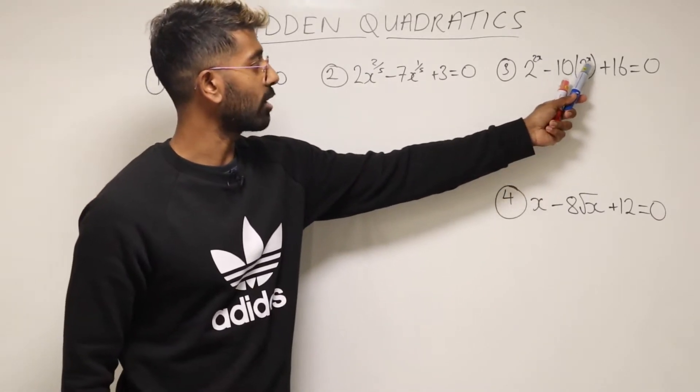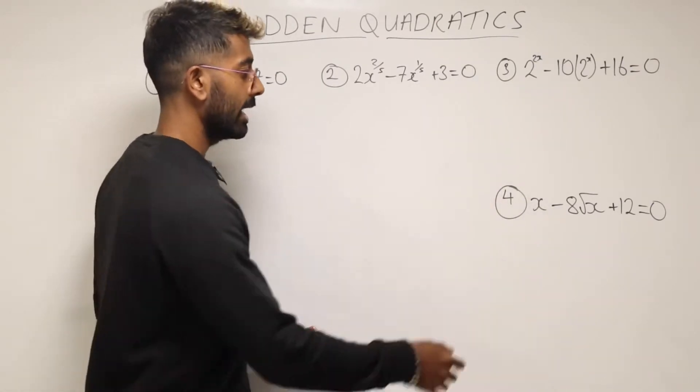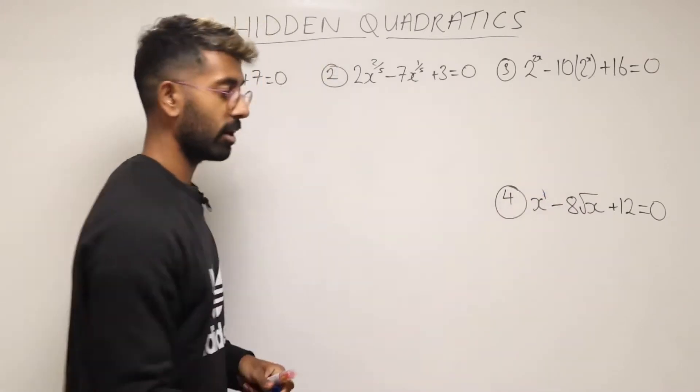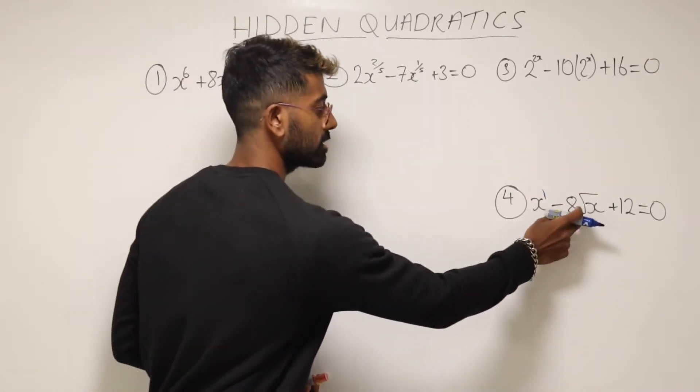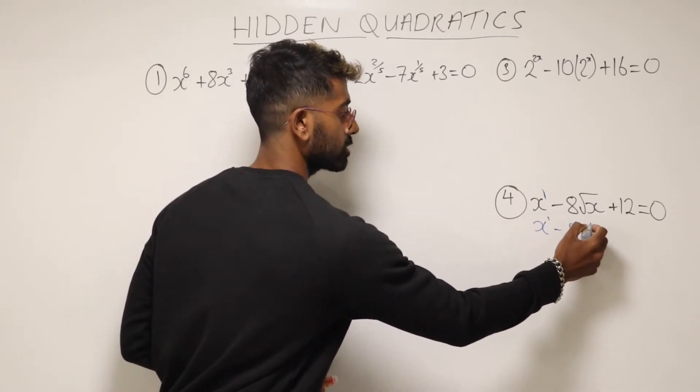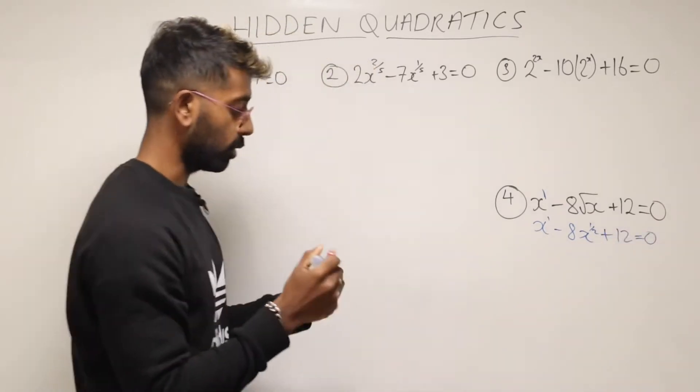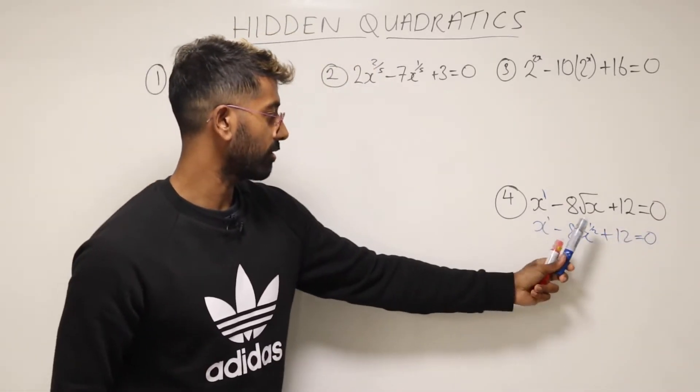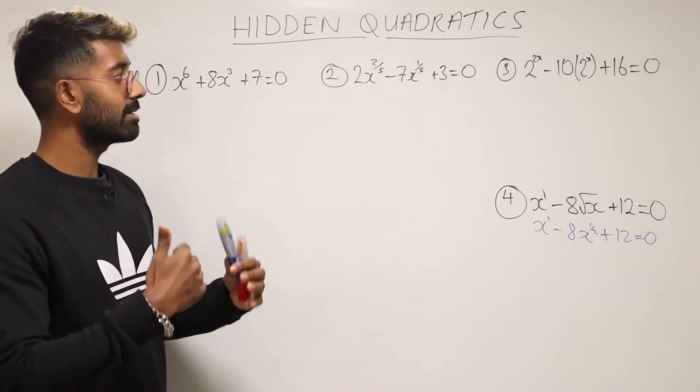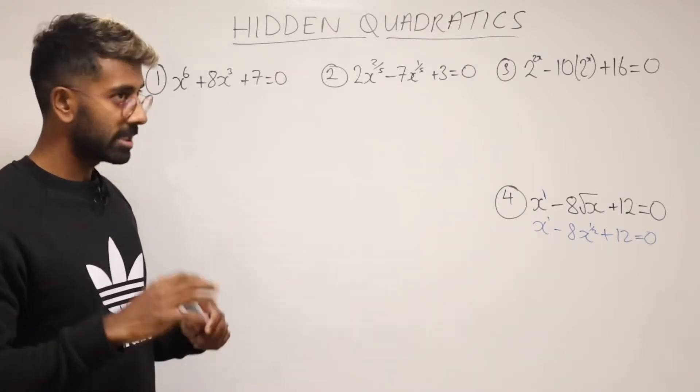And over here you've got a power of x and this is a power of 2x. So again, half. And then over here, what we've got to be able to spot is this. Well, this here is x to the power of 1 and then because this is square root of x, square root of x can be written as x to the half. So again, what we've now got is a power of 1 and a power of a half and obviously that's exactly half of 1. And now every time you see this, you can turn it into a quadratic. And so this is how we do it.